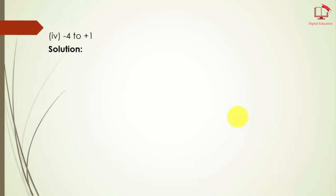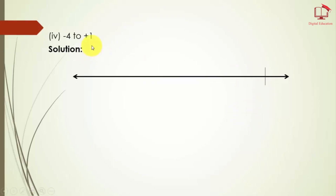Question number 1, part 4 — we have numbers from minus 4 to positive 1. Solution: first we will draw a straight line, then mark the points. Remember one thing — on the right-hand side of 0 we have positive numbers, and on the left-hand side of 0 we have negative numbers. So the first point is 1, second is 0, and the next number is minus 1.